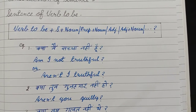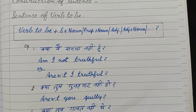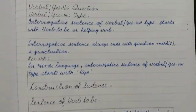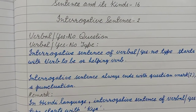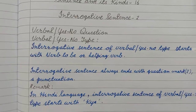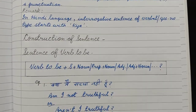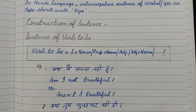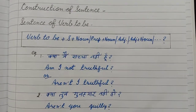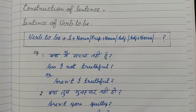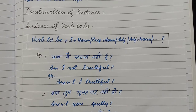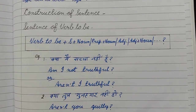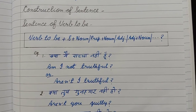Another answer is: Aren't I truthful? — because 'am + not' in interrogative sentence becomes 'aren't'. Note that this short form does not apply in assertive sentences. Also, the reason these are called yes-no type is because the answer to such a sentence — क्या मैं सच्चा नहीं हूँ — will always be either yes or no. That's why apart from verbal type, we also call them yes-no type.